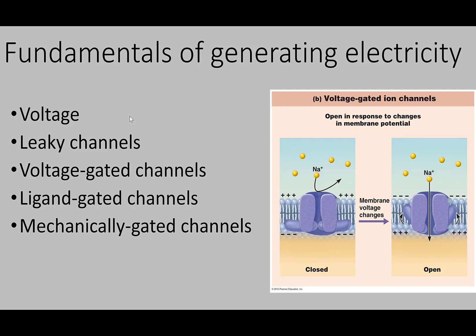Ligand-gated channels, also called chemically-gated channels, are like a lock and key. The channel is closed until a certain chemical — a certain ligand — binds to it. When that ligand binds, like putting a key in a lock, the channel opens and specific things can pass through. Mechanically-gated channels open and close in response to physical deformation — this is how touch receptors work. Normally they're closed, but touching something pushes on the channel, deforming it so it opens, and it closes when you stop touching.